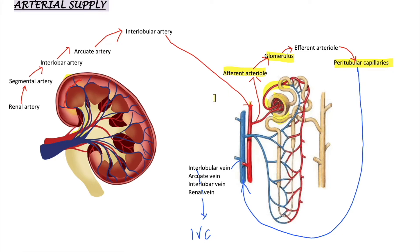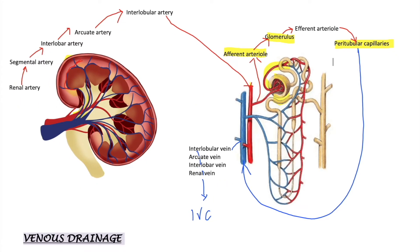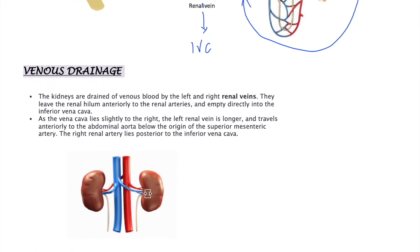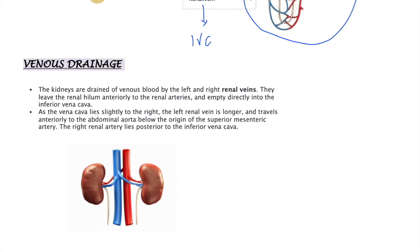Venous drainage is by the renal veins. The left renal vein is longer than the right because the IVC is present more towards the right side of the body. The left renal vein travels anteriorly to the abdominal aorta and passes below the level of the superior mesenteric artery. This is relevant to horseshoe kidney, where the lower poles of the two kidneys are connected, which can cause problems at the origin of the superior mesenteric artery.